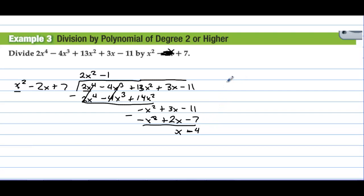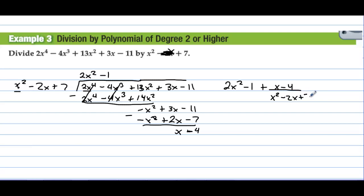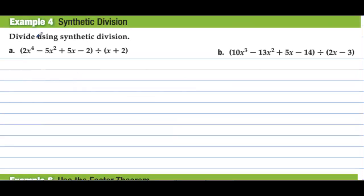So the answer is 2x² minus 1, plus the remainder x minus 4 over the quadratic x² minus 2x plus 7.